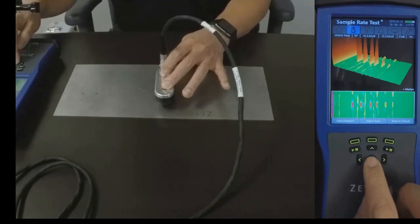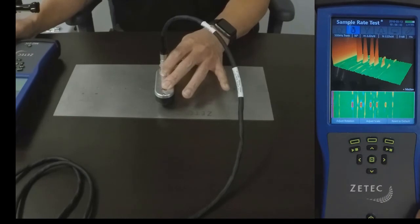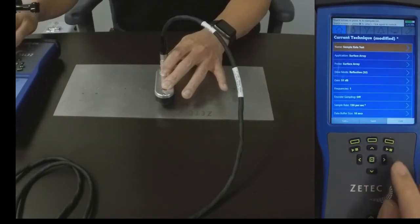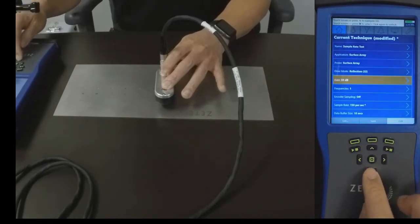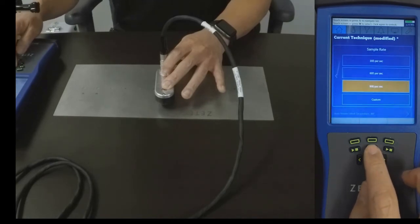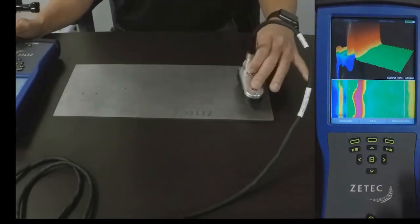Let's take a screenshot of this. Now let's change the sample rate and see how that affects the data. Let's scan the plate again.